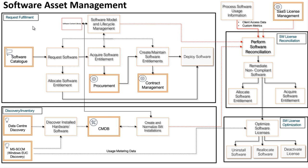On my screen here you can see four different components that are related to each other. On the top left corner we have Request Fulfillment, which deals with all processes related to software procurement, allocations, entitlements, and contracts.